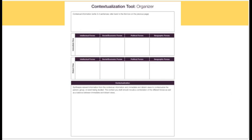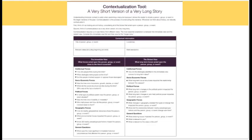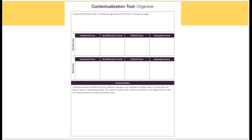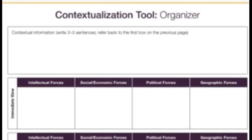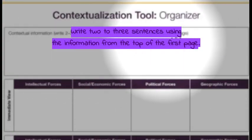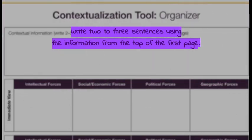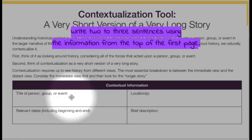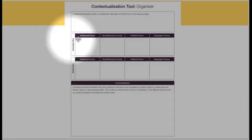This is the actual contextualization tool organizer — this is the explanation, which can be confusing. This is the organizer. I need to break it down too. It tells you all sorts of things you should, could, or would do. Step one when I say stop: let's go back to the first box in the previous page — that basic information: title, group, event, relevant dates, location, brief description. Remember, you're not writing a shopping list — you're getting specific.